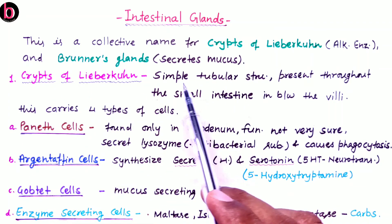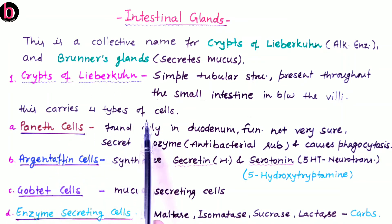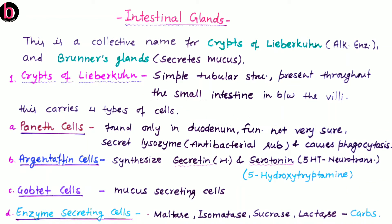Crypts of Lieberkühn is a simple tubular structure present throughout the small intestine in between the villi, which are finger-like projections from the innermost layer of the alimentary canal. Crypts of Lieberkühn carries four different types of cells. First, paneth cells, found only in the duodenal region. Their function is secretion of lysozyme, an antibacterial substance, and they cause phagocytosis — ingestion and killing of pathogenic substances.